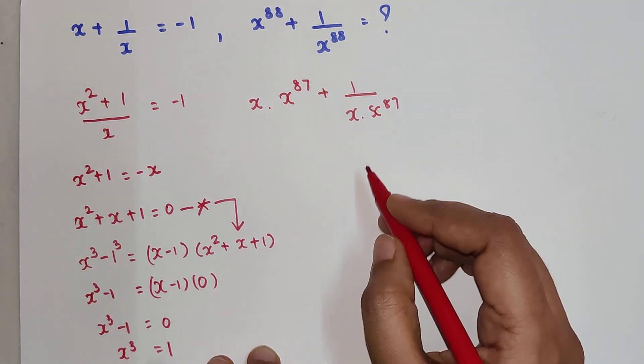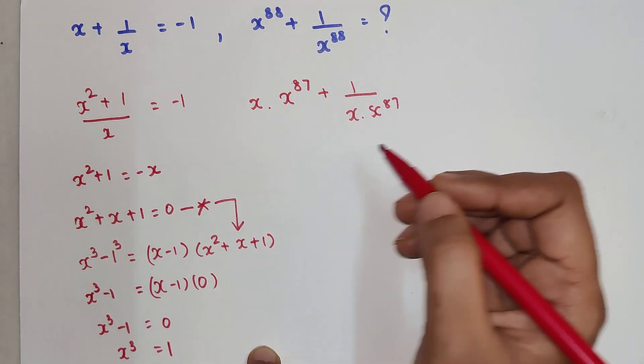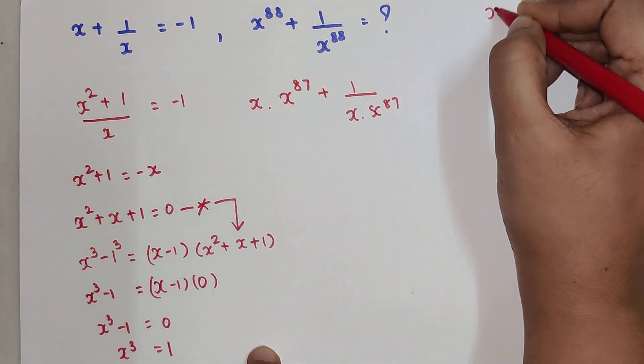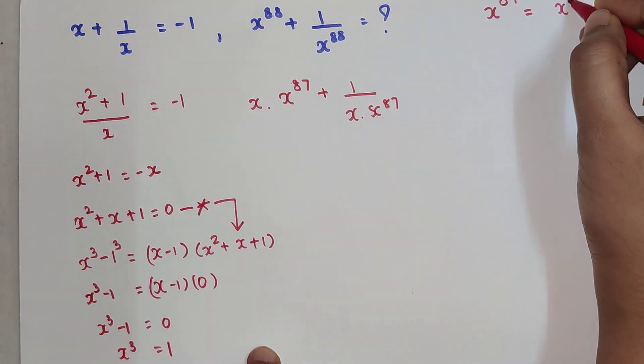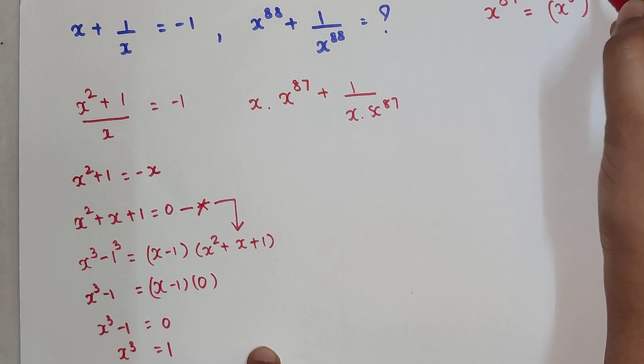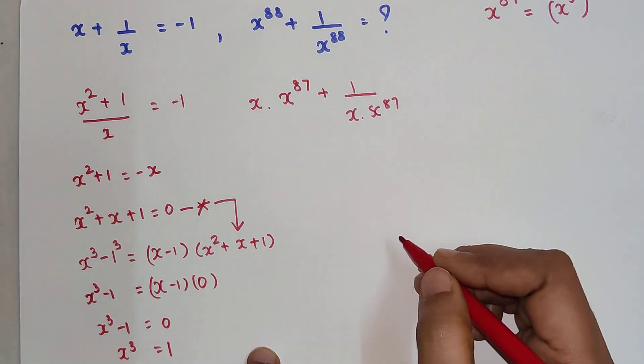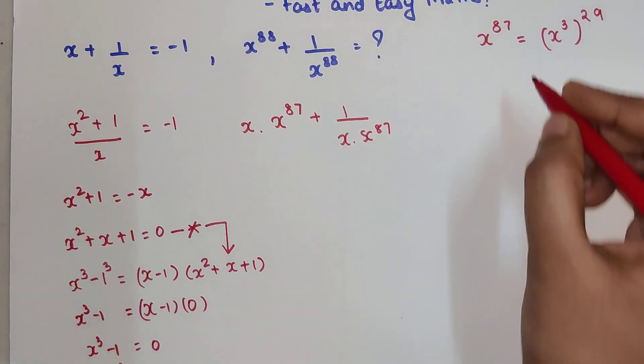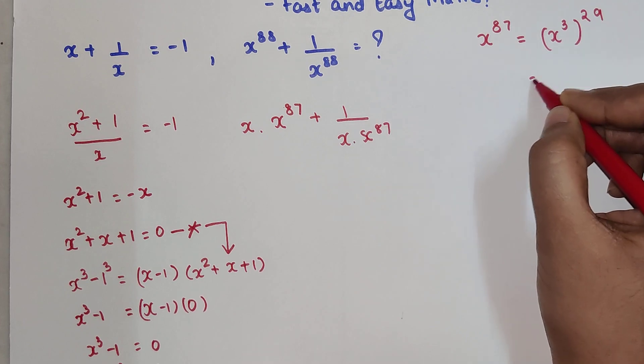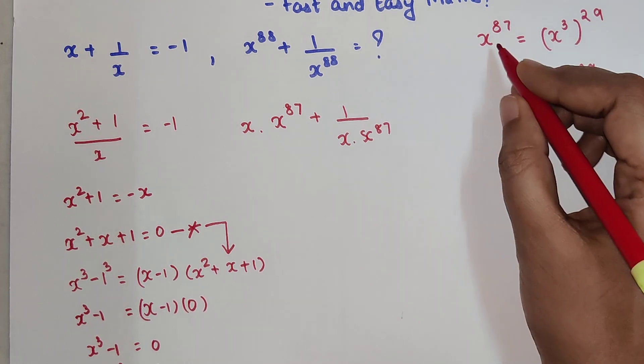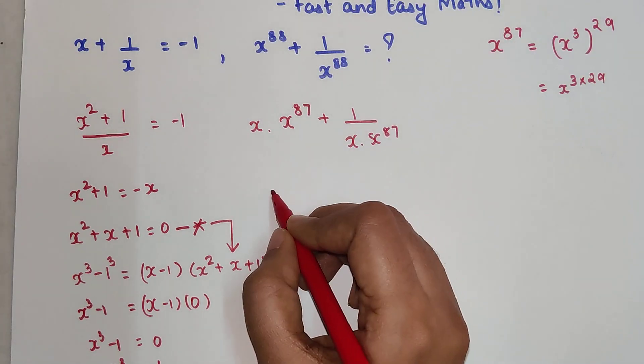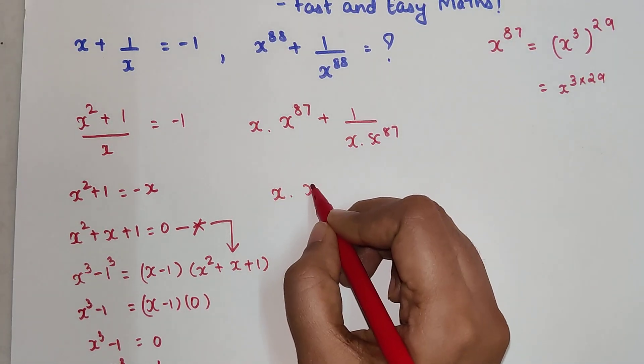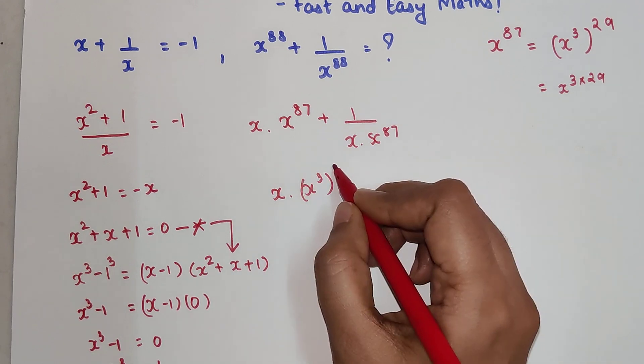Now this x^87, please understand, if I want to write it in terms of 3, I can write x^87 as (x³)^29, because this is nothing but x^(3×29), which is x^87. So this can now be written as x·(x³)^29 + 1/(x·(x³)^29).